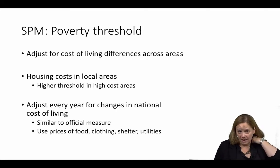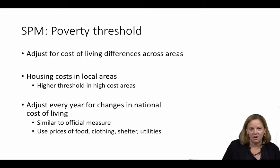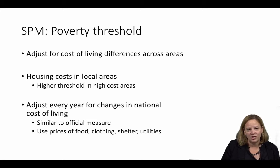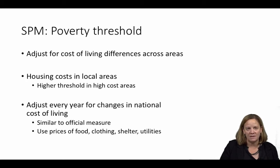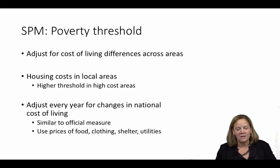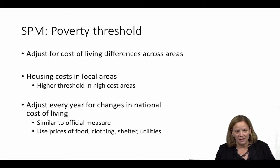One other major adjustment involves adjusting the thresholds in the SPM for geographic differences in the cost of housing. This is a substantive change from the Official Measure, which does not make adjustments for differences in the cost of living. Year over year, the SPM threshold is also adjusted for changes in the national cost of living, using a five-year moving average of expenditures by U.S. families on food, clothing, shelter, and utilities. The Official Measure is also adjusted for national income levels, but using the Consumer Price Index, which captures price changes beyond very essential goods.